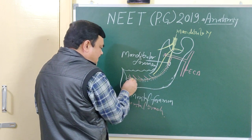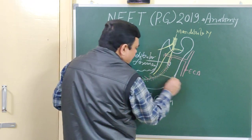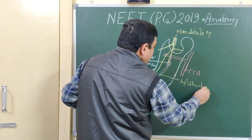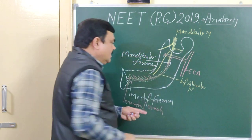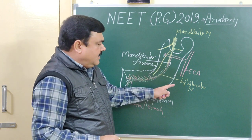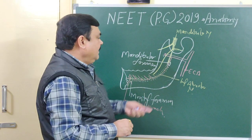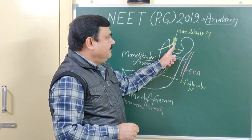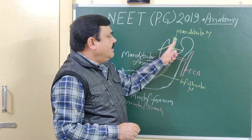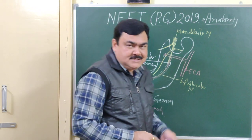It gives the mental branch and a branch to the root of the teeth. So this is the inferior alveolar nerve and vessels. The nerve is a branch of the posterior division of the mandibular nerve, and the artery is a branch of the first part of the maxillary artery.